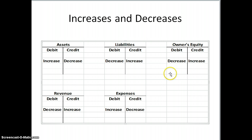We have assets, liabilities, owner's equity, revenue, and expense, and I have them all listed here. Assets and expenses have the same behavior: increase on the left, decrease on the right. The other three accounts — liabilities, owner's equity, and revenue — have the decrease on the debit side and an increase on the credit side. Please don't assign good and bad rules to debits and credits. They're not good or bad, they don't have any superpowers. Debits are one thing and credits are another — sometimes they increase and sometimes they decrease. I encourage you to memorize this, as it really helps with your study of accounting and will give you instant recall when reading reports.